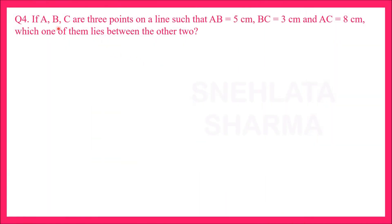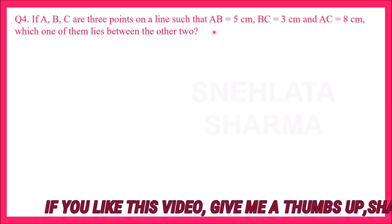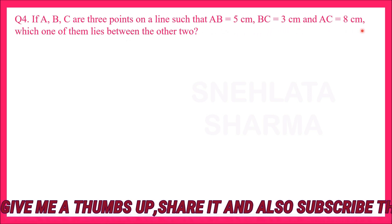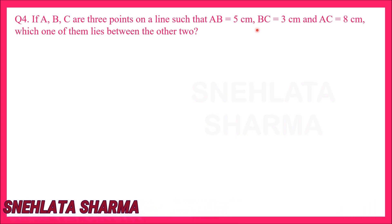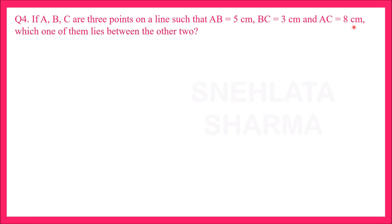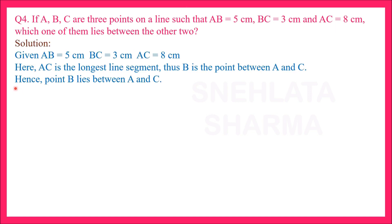Question number 4: If A, B, C are 3 points on a line such that AB is equal to 5 cm, BC is equal to 3 cm and AC is equal to 8 cm, which one of them lies between the other two? Is question mein A, B and C 3 points hain - AB 5 cm hai, BC 3 cm hai aur AC 8 cm hai. Is information se humein batana hai A, B and C mein se kaun sa point dusre 2 points ke beech mein lie karta hai. AC yahan par sabse lamba hai, so A and C end points honge aur B point A and C ke beech mein lie karega. Given AB=5 cm, BC=3 cm, AC=8 cm. Here AC is the longest line segment, thus B is the point between A and C.